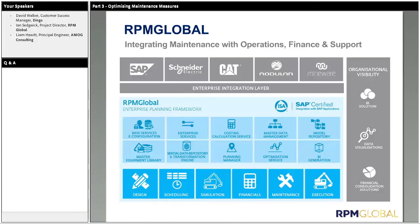At RPM Global, we intrinsically understand the importance of having this integrated solution — integrating lifecycle cost and reliability, integrating maintenance with the rest of the stakeholders in the value chain, mine planning, and understanding the influence on how we need to manage and optimise our maintenance strategy. How we develop our maintenance strategy generates and supplies a budget to finance — this is what we need to do, how often, what resources we need, how much it costs. That means we can all measure ourselves against availability and those goals.